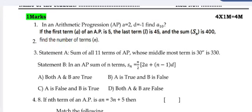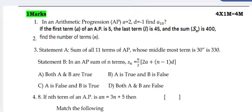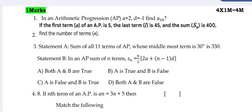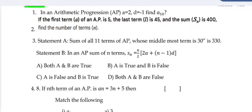Question two: If the first term of an AP is 5, the last term l is 45, and the sum Sₙ is 400, then find the number of terms n. Statement A: Sum of all 11 terms of an AP whose middle most term is 30.